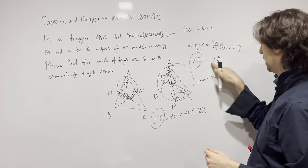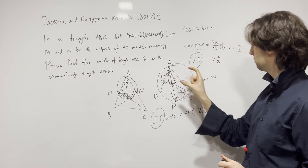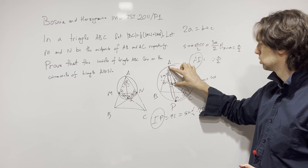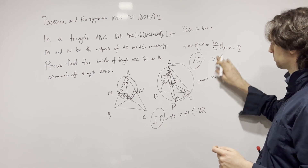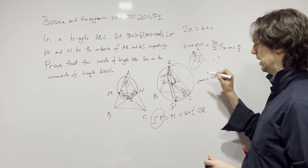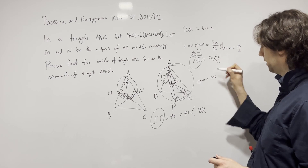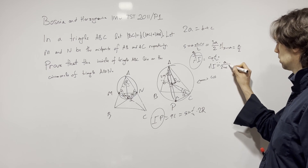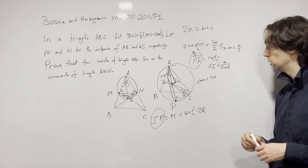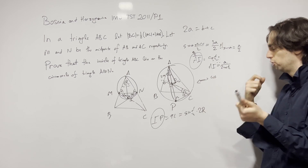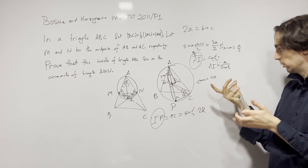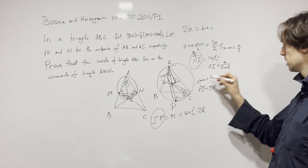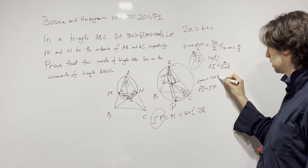So cosine of alpha/2 equals (A/2) divided by AI, which means AI equals (A/2) divided by cosine of alpha/2. It's always good to pause and check that you're doing the trigonometry correctly. So we have AI equal to (A/2) divided by cosine of alpha/2.